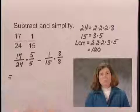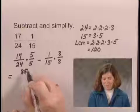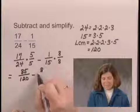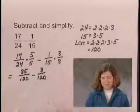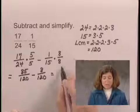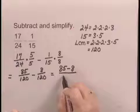Carrying out the multiplications, multiplying numerators, multiplying denominators, we get 85 over 120 minus 8 over 120. And now we have a common denominator, so we can subtract numerators, 85 minus 8 over 120.